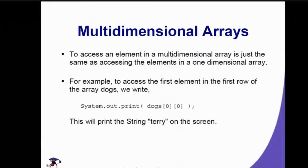In multidimensional arrays, we access an element just the same as accessing elements in a one-dimensional array. To access the first element in the first row, we simply write the index of each row and column.